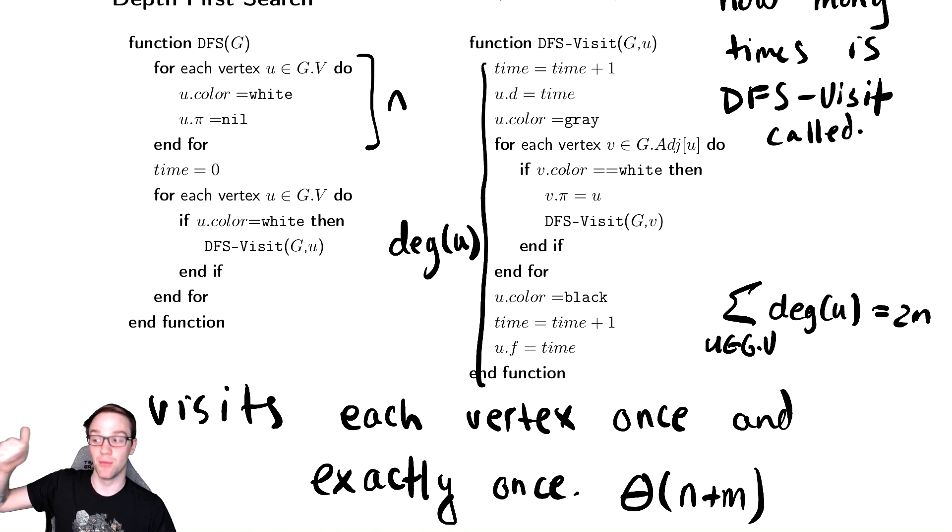And while it's getting called on every vertex, it has to run through that for loop. That's the only main contributor for the cost. So the DFS-Visit's total time of every single call is 2m and the initialization takes n time. Therefore, the total running time is n plus m, just as it was for breadth-first search.